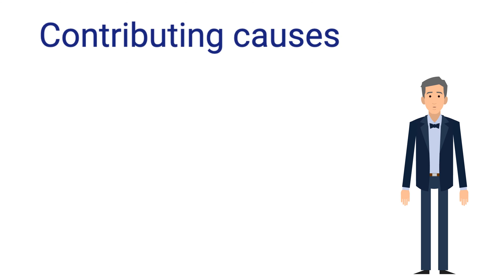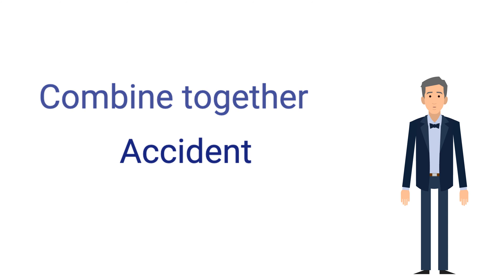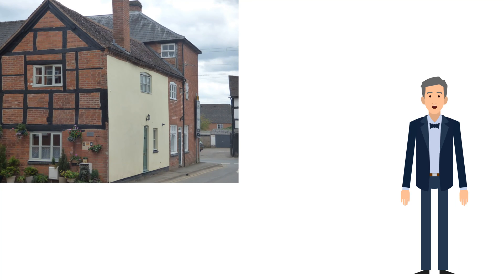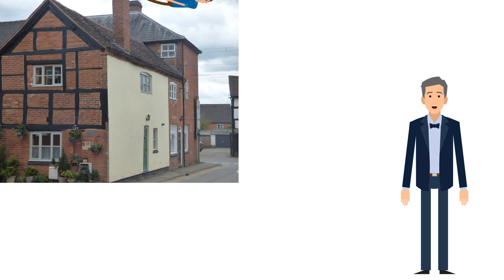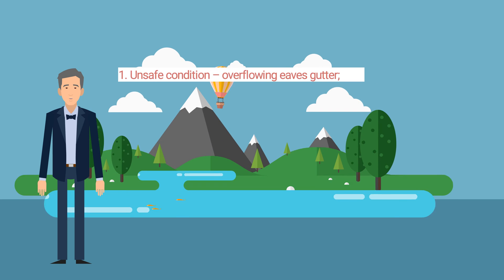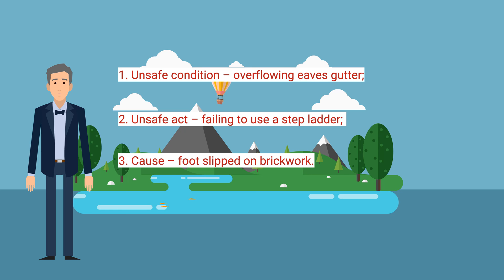The theory of multi-causation is that contributing causes combine together in a random fashion to result in an accident. During accident investigations, there is a need to identify as many of these causes as possible. For example, a maintenance employee notices that the eaves gutter to a single-story building is overflowing during periods of rain, suggesting that the outlet to the rainwater pipe is blocked with debris. He shins up the rainwater pipe and reaches into the outlet to remove the debris. However, his foot slips on the brickwork surface to the wall and he falls backwards, fracturing his wrist in the fall. The single causation approach adopted by Heinrich would analyze this accident thus: 1. Unsafe condition — overflowing eaves gutter. 2. Unsafe act — failing to use a stepped ladder. 3. Cause — foot slipped on brickwork.